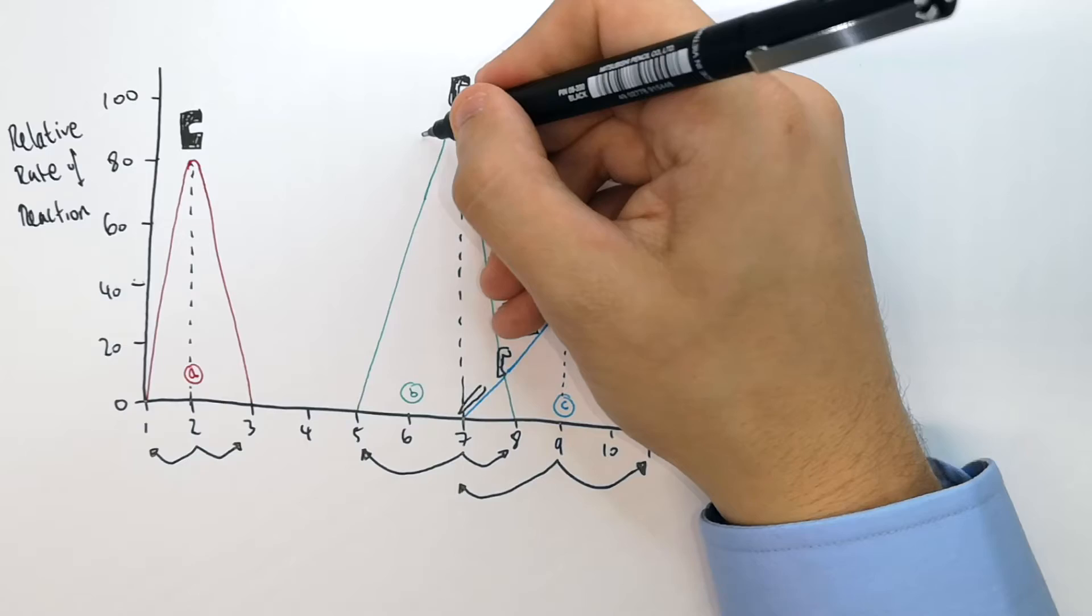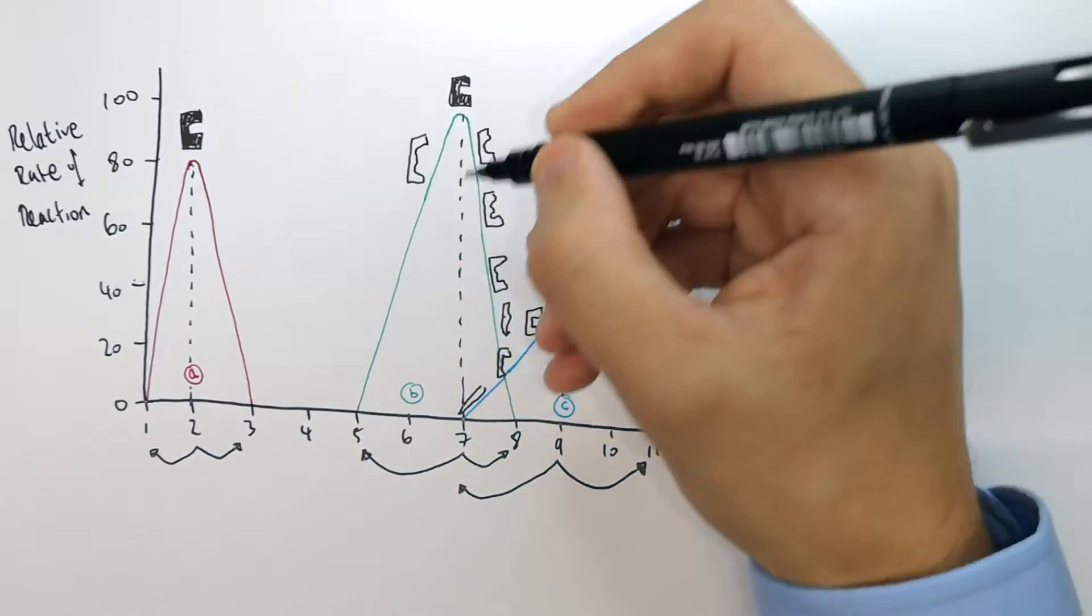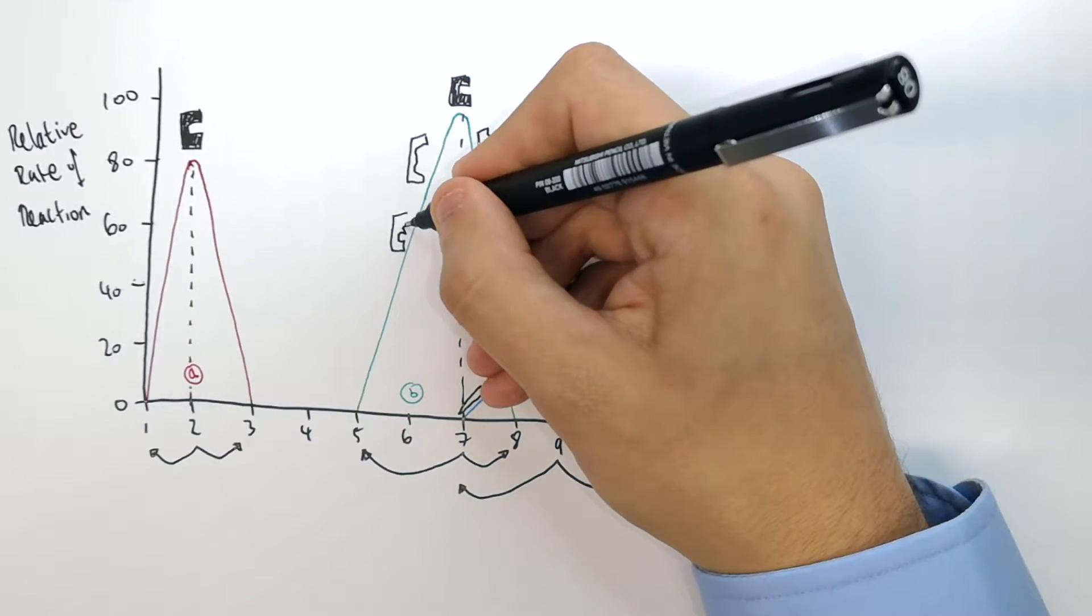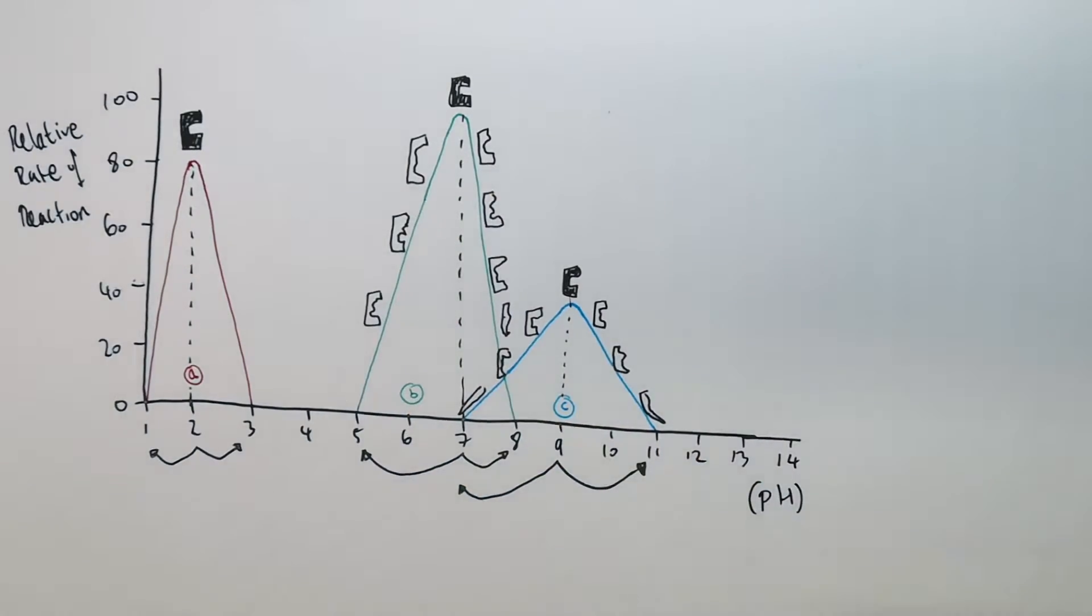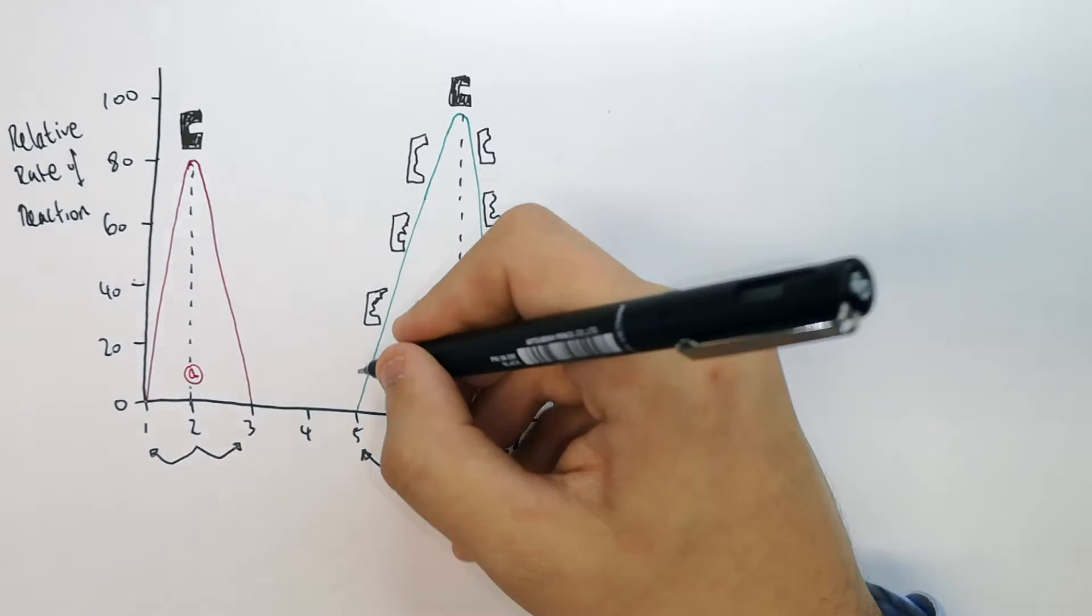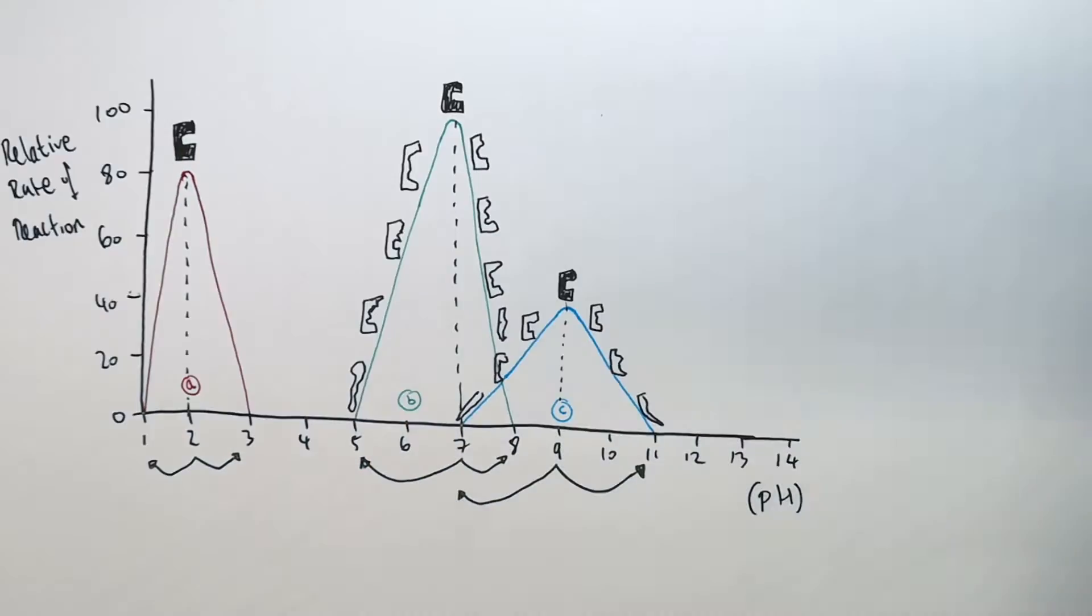If you're below pH 7 into more acidic conditions, the active site will denature. Therefore, the substrate can no longer bind and the amount of product formed decreases. Therefore, the rate of reaction decreases.